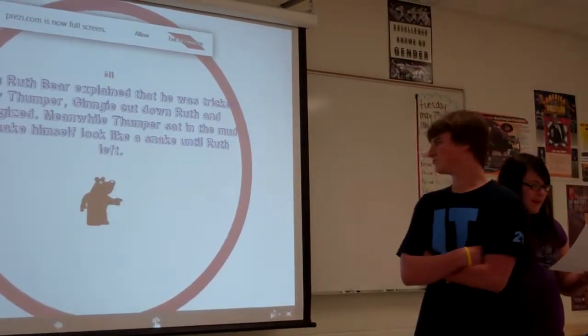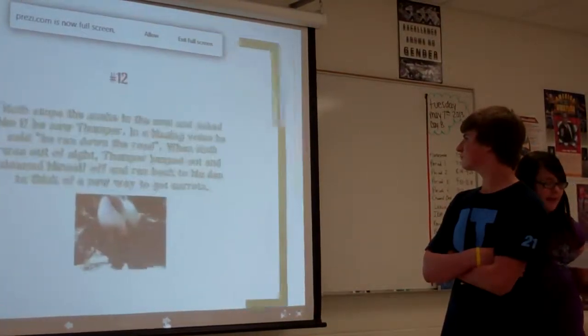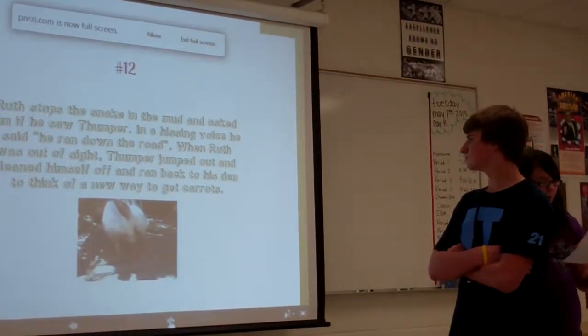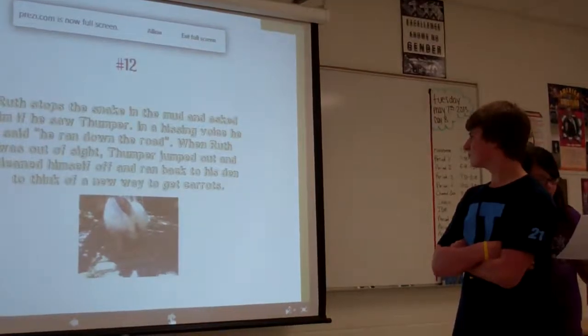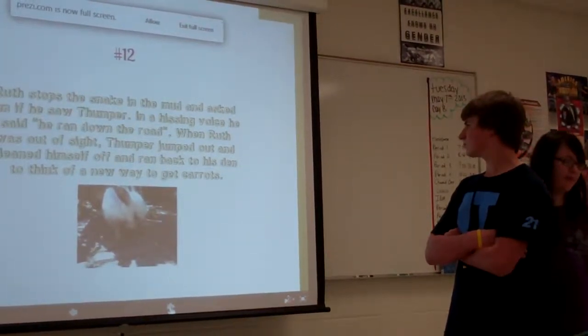Meanwhile, Thumper sat in the mud to make himself look like a snake until they left. Ruth saw the snake in the mud and asked him if he saw Thumper. In a hissing voice, he said he ran down the road. When Ruth was out of sight, Thumper jumped out and cleaned himself off and went back to the den to think of a new way to get more carrots.